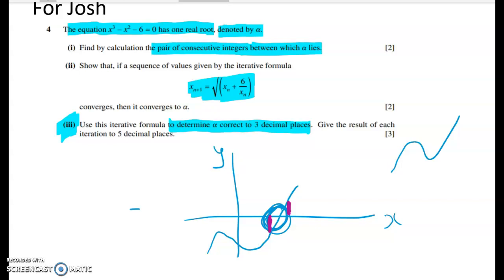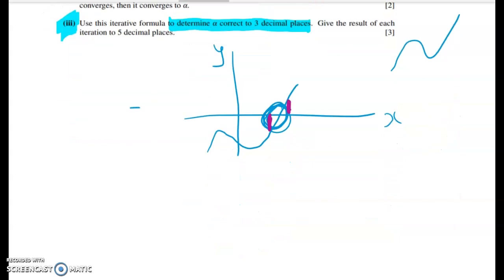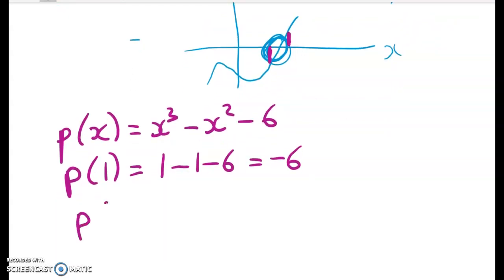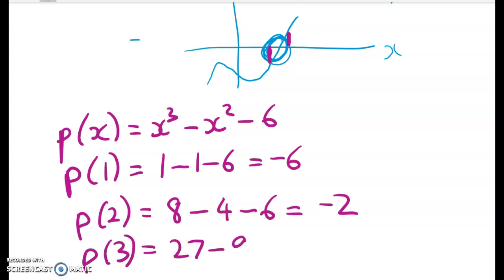So what we're going to use is a lot like when we do factor and remainder theorem things. We're just going to use guess and check. We're going to call the polynomial p of x is x cubed minus x squared minus 6 and then we're going to substitute in values. Now I'm just going to start by chucking in x equals 1 and I get 1 minus 1 minus 6 which is negative 6. I'm going to try p of 2 and hopefully I'm going to get closer to a positive number. So we've got 8 minus 4 minus 6 which is negative 2. So it looks like I'm getting closer to where the root is and then let's try p of 3. So when x is 3 I've got 27 minus 9 minus 6 which gives me what's that 12.